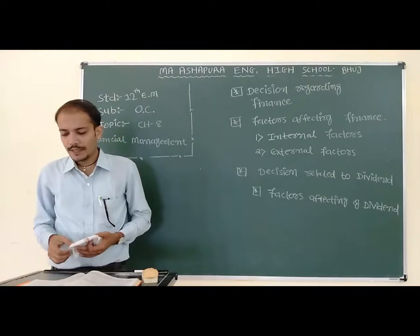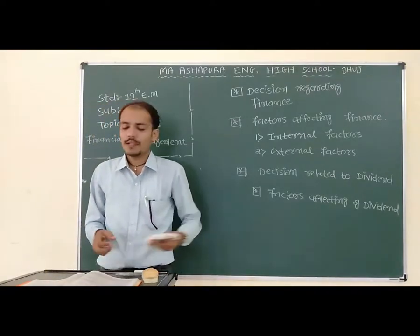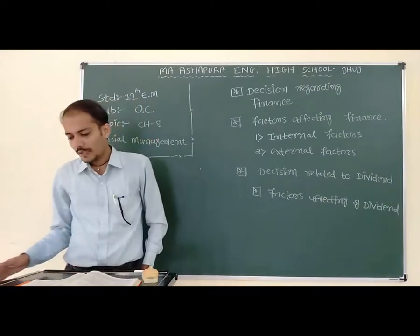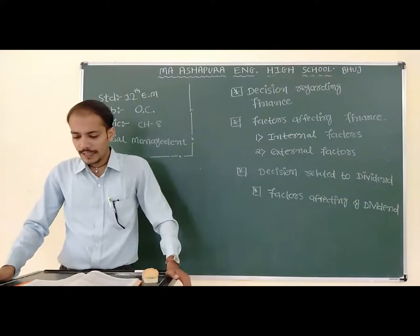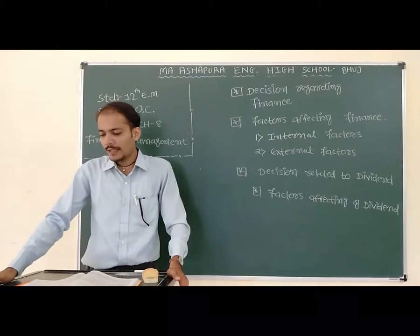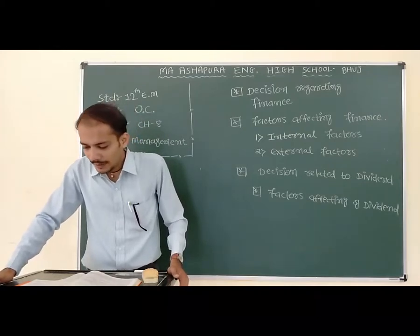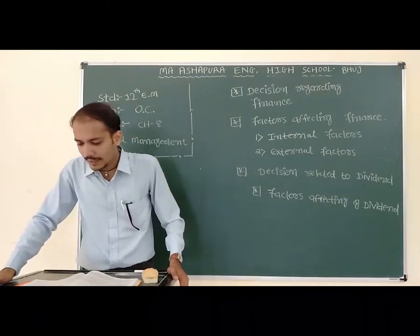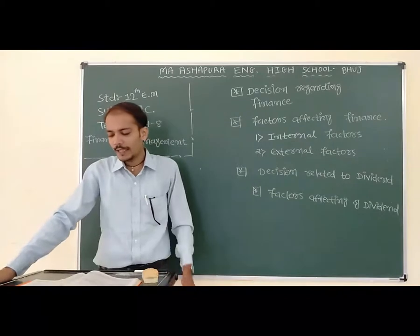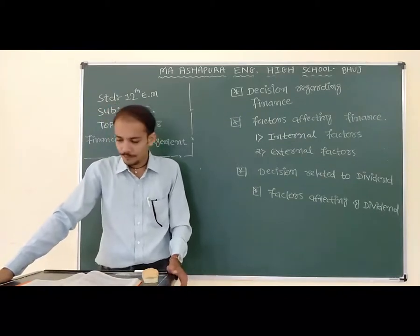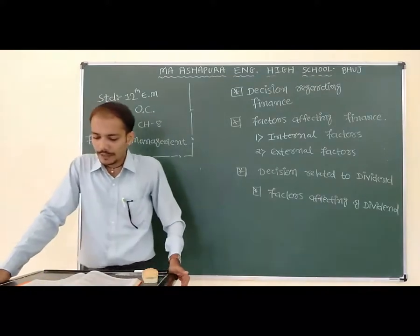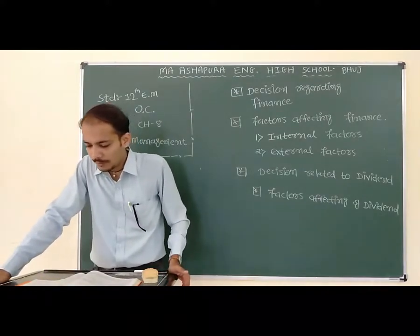Capital structure is a mixture of the owner's capital and debt. The financial manager has to take a decision regarding the portion to maintain between equity and debt in the capital. A proper proportion of equity capital and debt is called optimum capital structure.